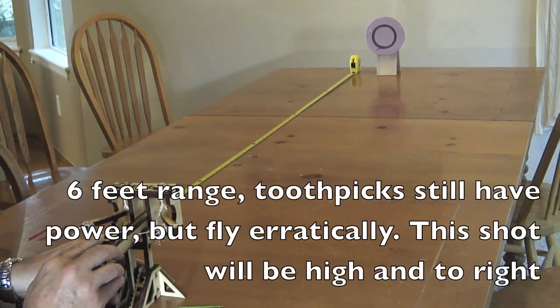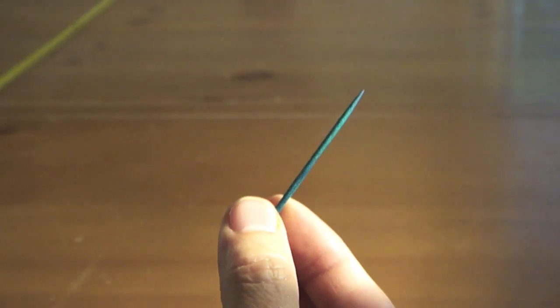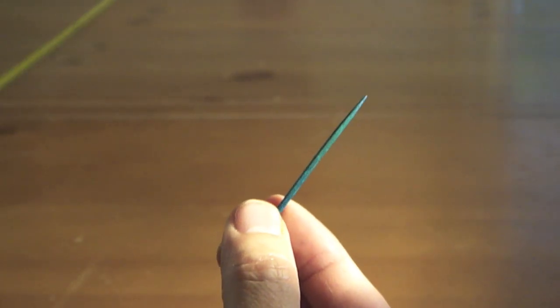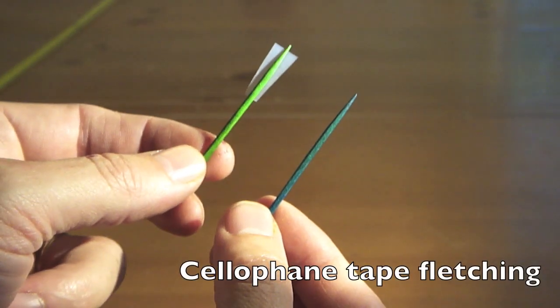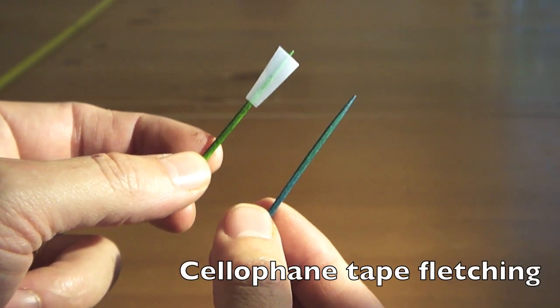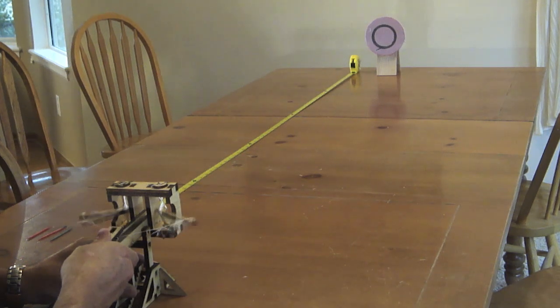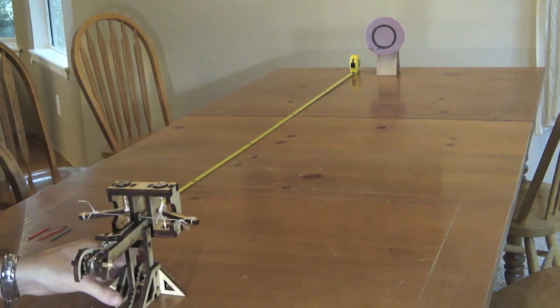For longer range shots, this is six feet, equivalent to sixty feet. The toothpicks still had plenty of power but they would fly off course, so I added a simple fletching just using some cellophane tape taped onto the toothpick and had pretty good results.